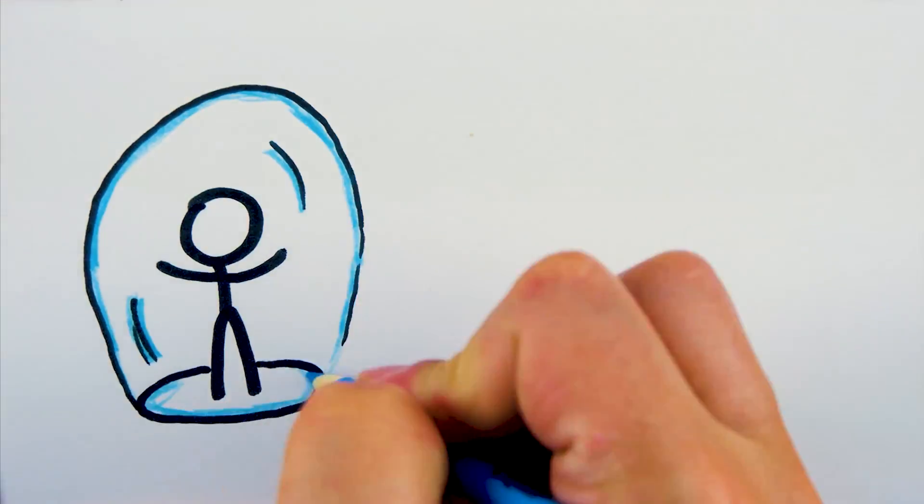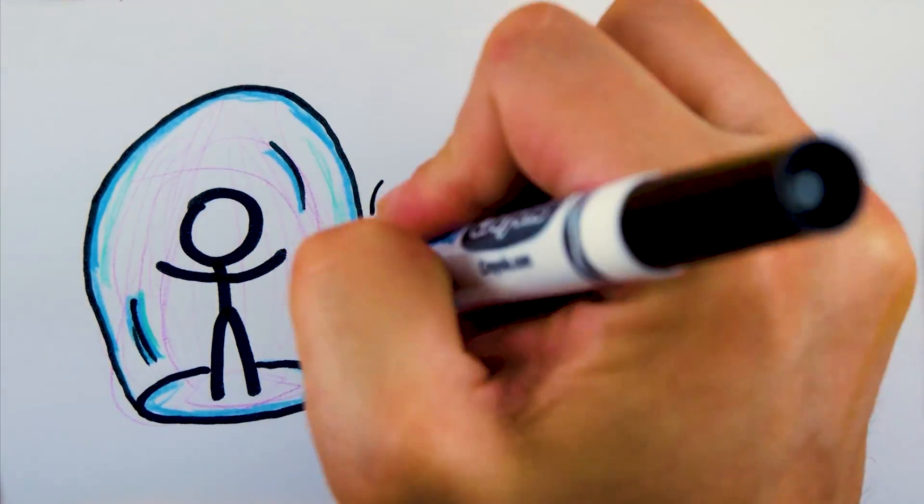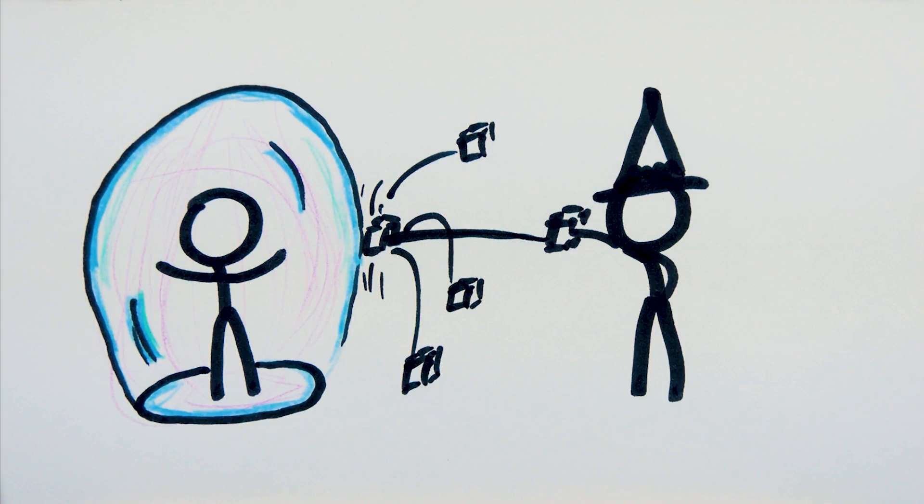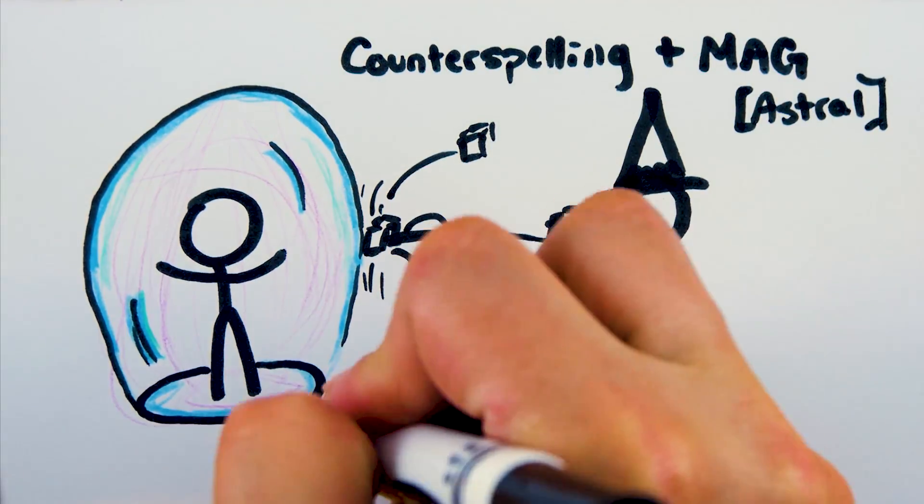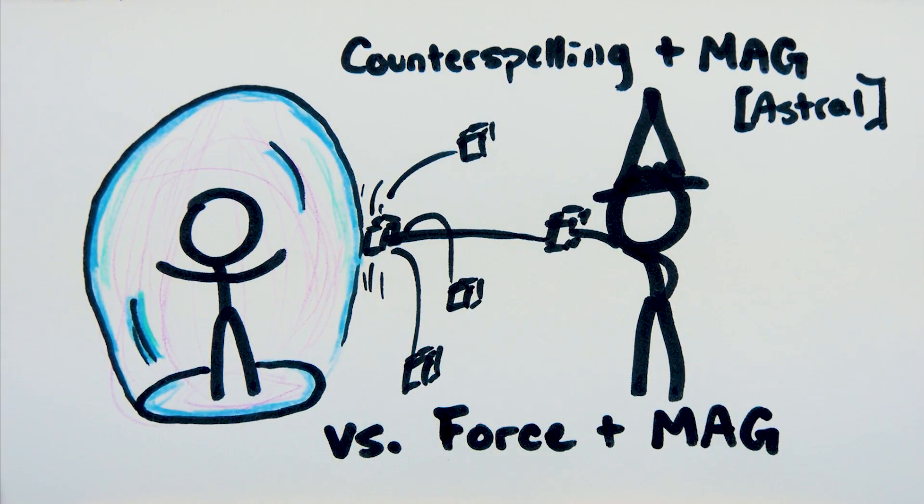Counterspelling can also be used to dispel sustained and quickened spells. A dispelling test is counterspelling plus magic, limited by astral, versus the spell's force plus the caster's magic rating, plus any amount of karma that was spent on the quickening of the spell, if any. A counterspelling focus can be used to add to your dice pool, and reagents can change your limit on the test.